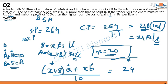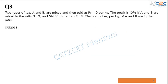The maximum occurs when both quantities are equal. The third question also appeared in CAT 2018. Two types of tea, A and B, are mixed and sold at 40 rupees per kg. Profit is 10% when A and B are mixed in ratio 3:2, and 5% when mixed in ratio 2:3. We need to find the cost prices of A and B.